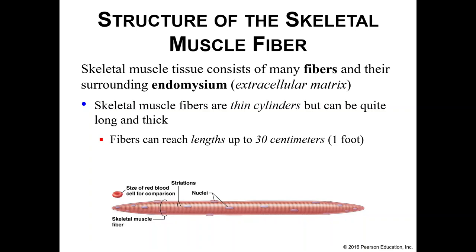Skeletal muscle tissue contains lots of fibers. We surround each individual skeletal muscle fiber with a layer known as the endomysium — "endo" meaning inside, "mysium" meaning muscle. Your skeletal muscle fibers are thin and cylindrical — like skinny striped straws — and they can be quite long, reaching up to about 30 centimeters, which is about a foot.